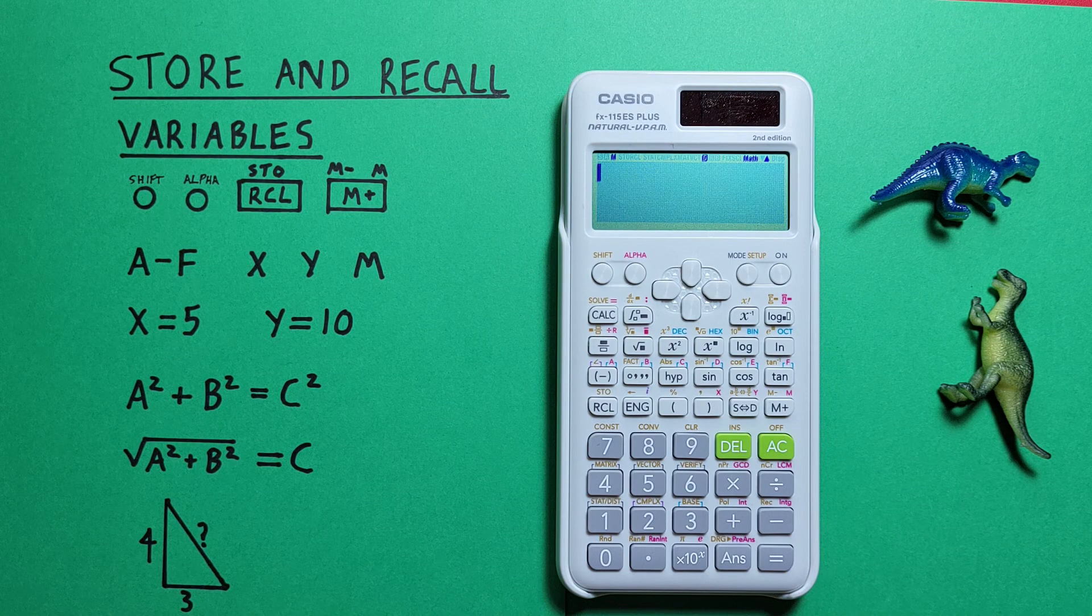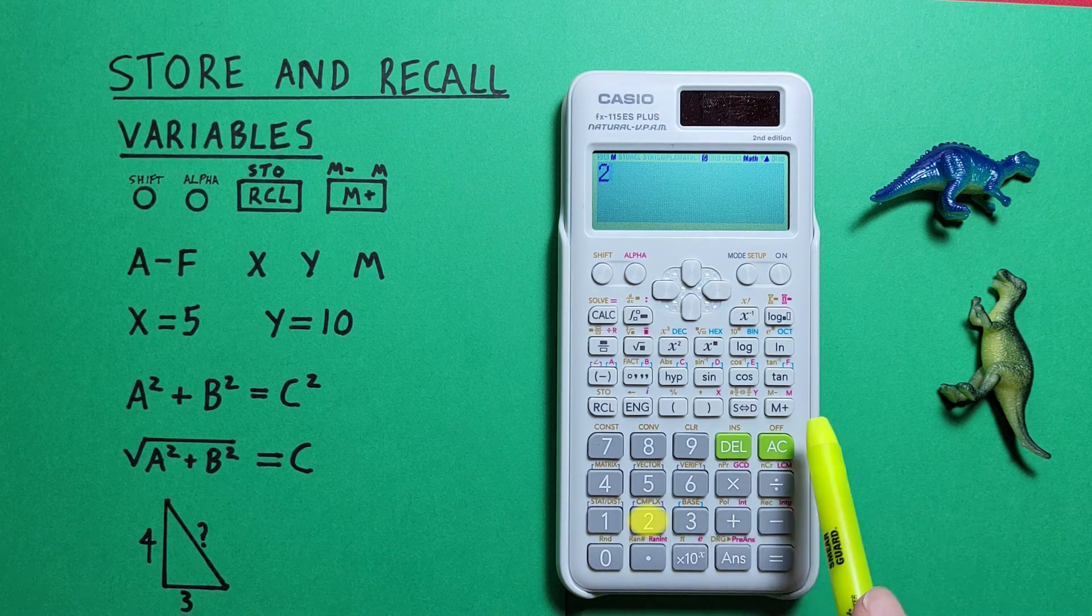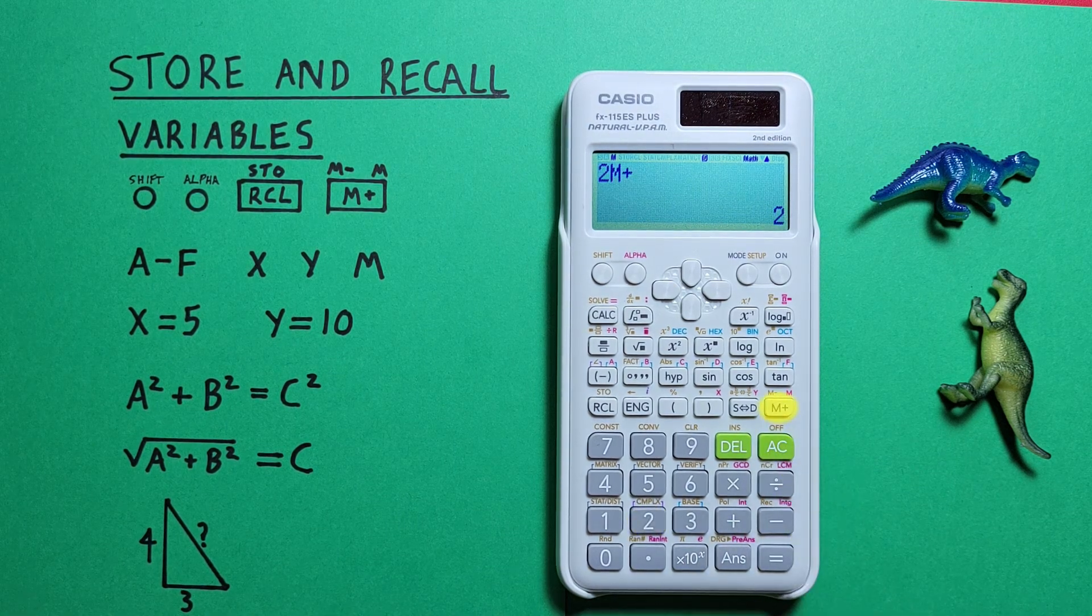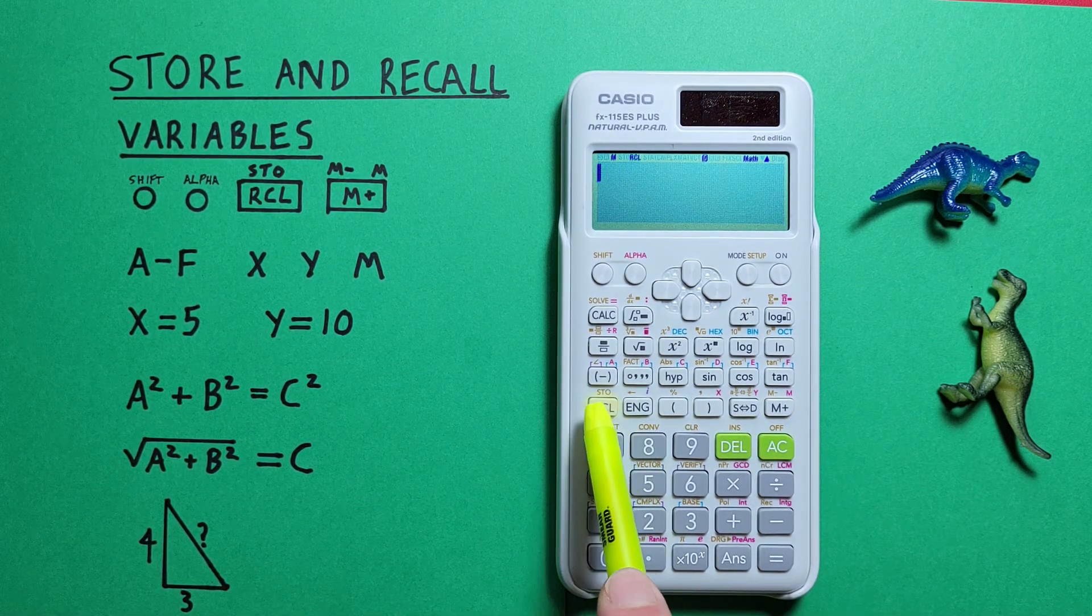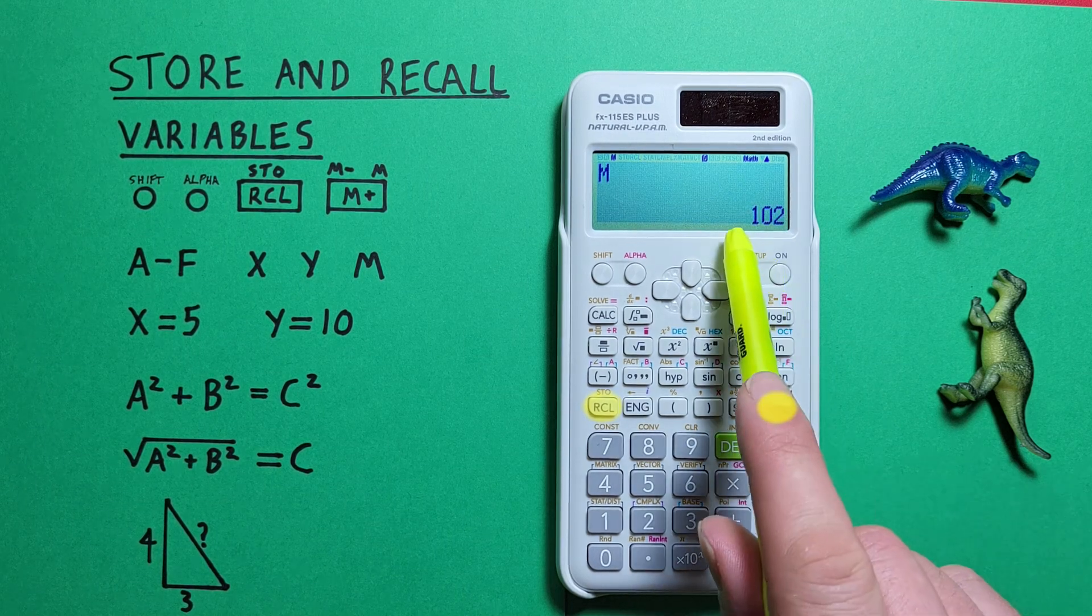Now if we wanted to add a 2 to that, we can just press 2 and then the m plus key. Now if we recall our m, we see it's 102.